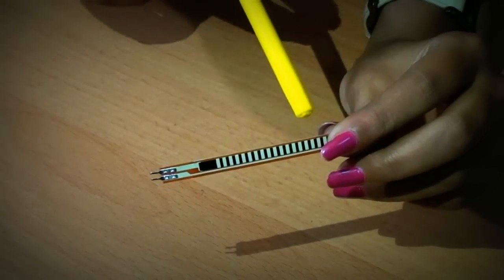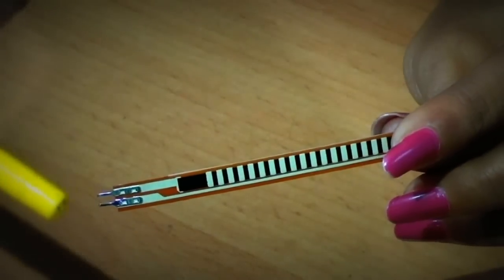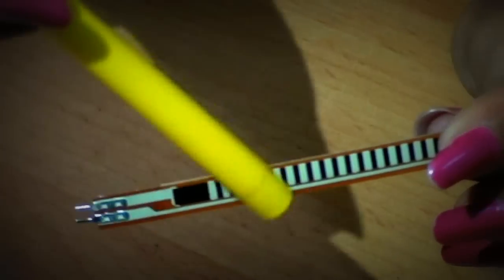This is the flex sensor. The length of the flex sensor is 2.2 inches. These two are the output pins. One is for ground and the other is for the analog output.